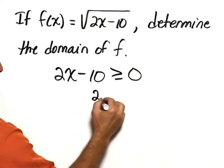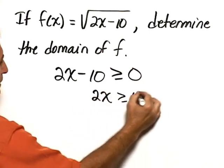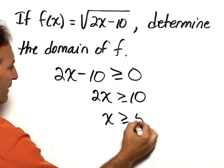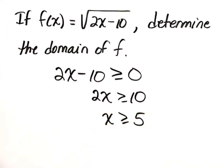Adding 10 to both sides, we have 2x is greater than or equal to 10, and dividing both sides by 2, we have x is greater than or equal to 5.